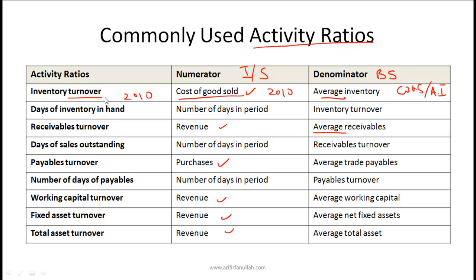A high inventory turnover ratio tells you the company is selling a lot of inventory while maintaining low average inventory — a high numerator and low denominator is a good sign, showing inventory moves through the company very fast. Days of inventory on hand equals 365 divided by the inventory turnover ratio, giving an idea of approximately how long inventory sits at the company. A high number is bad because inventory sits around for a long time; a low number is good because inventory moves fast.